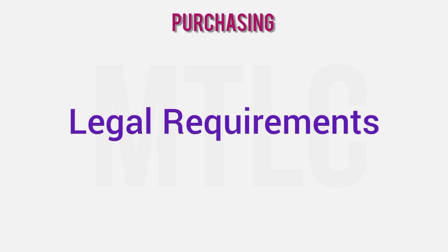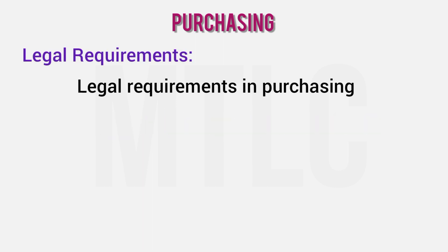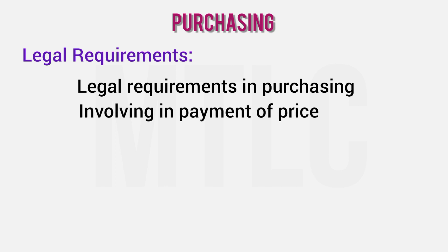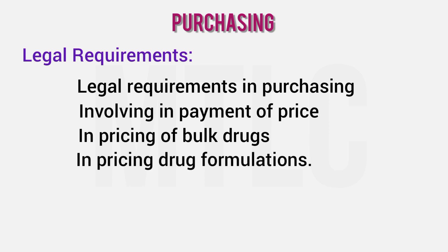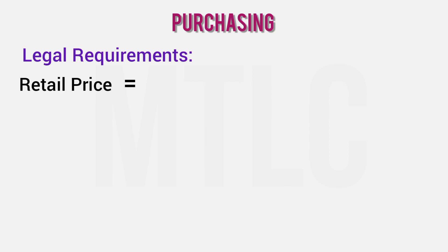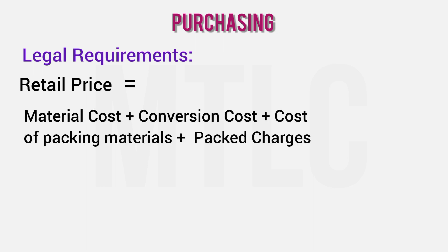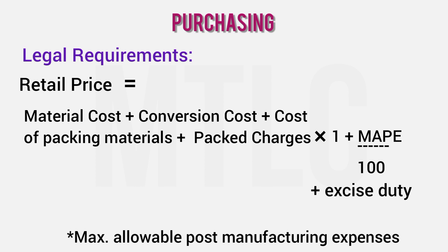Next are the legal requirements for purchasing. There is the NNN agreement and payment of price requirements. For bulk drugs, there are three types of formalities, including documents. For drug formulation pricing, the retail price formula is: Retail Price = Material Cost + Conversion Cost + Cost of Packaging Material + Packing Charges, multiplied by (1 + MAPE/100) + Excise Duty, where MAPE is the Maximum Allowable Post-Manufacturing Expenses.